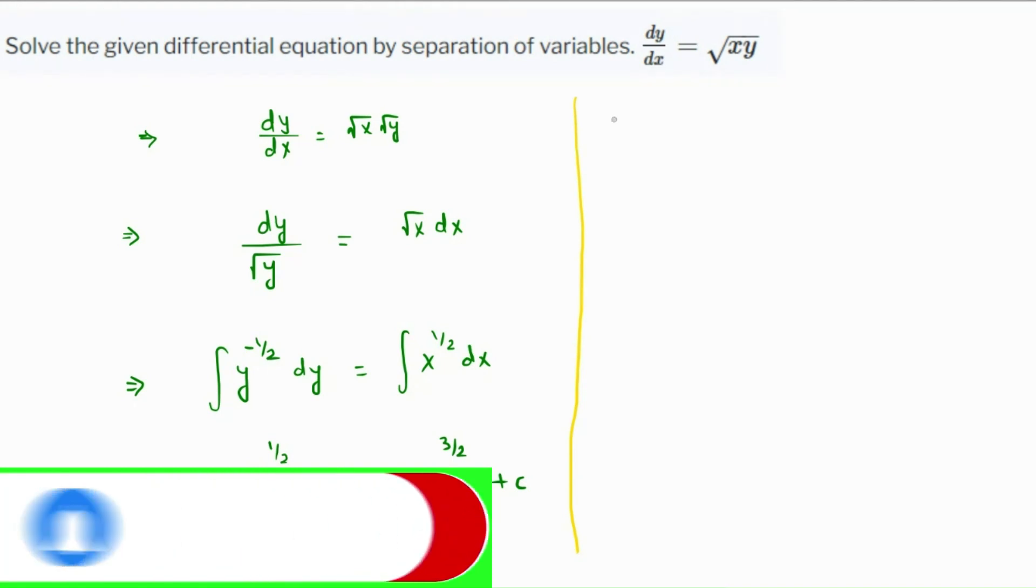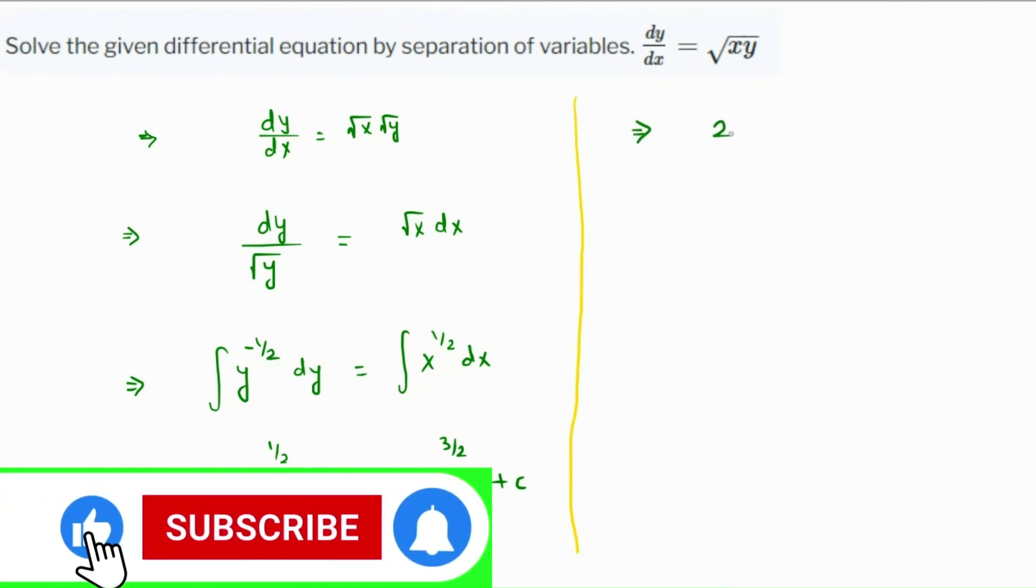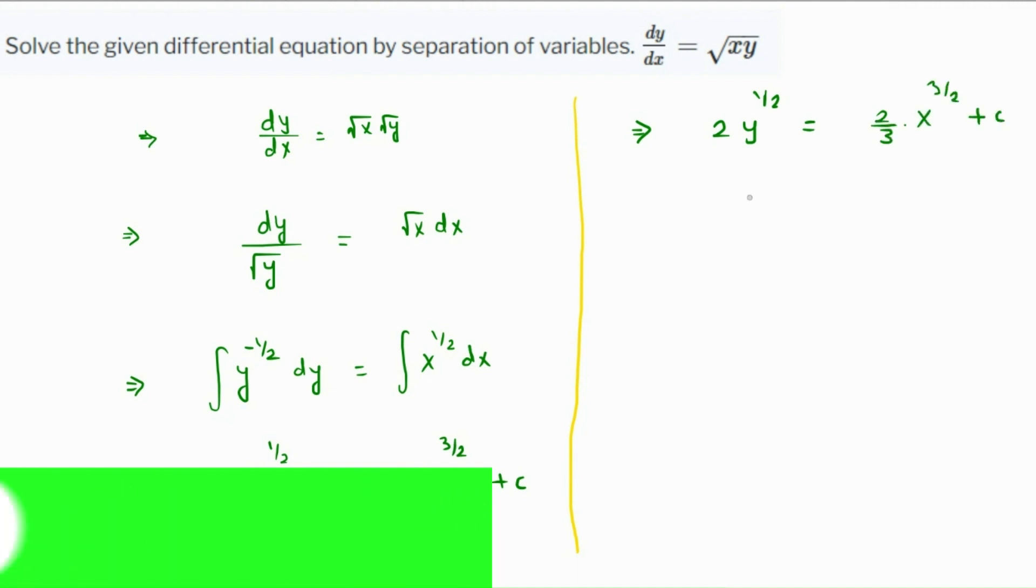This is just a matter of simplification. Now if we do that, the 2 comes on top, so it becomes 2 times y raised to 1 over 2. This becomes 2 over 3 times x raised to 3 over 2 plus c.